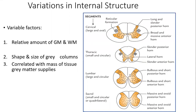The lumbar segment is large and almost circular. There is a dorsal white commissure present between the posterior median septum and the gray commissure. It has a bulbous, short posterior horn, and the ventral horn has become bulbous and massive. The sacral segment is small and circular or quadrilateral, the posterior median septum is complete with no dorsal white commissure, and it has massive ovoid posterior and anterior horns.